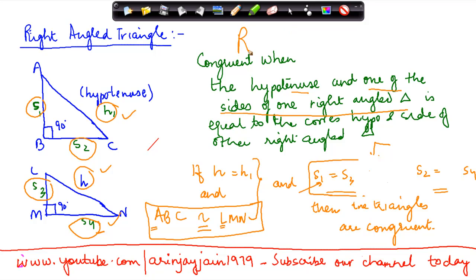And this is also known as the RHS congruence, in which the right angled triangle, the hypotenuse, and the side are equal. So R stands for the right angle triangle which is already there, then there is a hypotenuse and one of the sides.